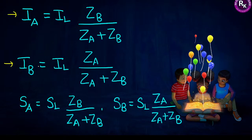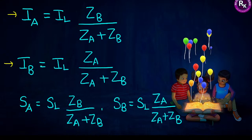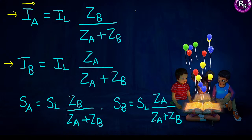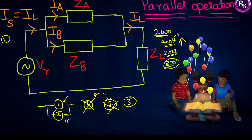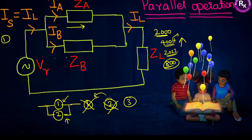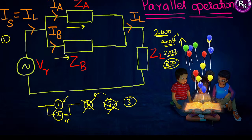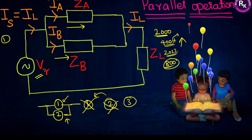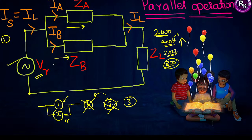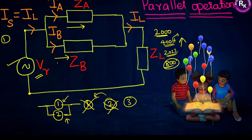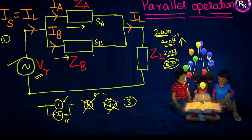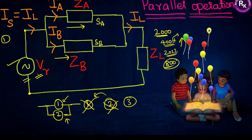The next thing is identifying the current flow when two transformers are connected in parallel. Transformer A carries current IA and transformer B carries current IB. Since the voltage and polarity of both transformers are equal, we treat them as a single source. However, the current rating, impedance, and apparent power delivered by each are different — everything differs except voltage and polarity.